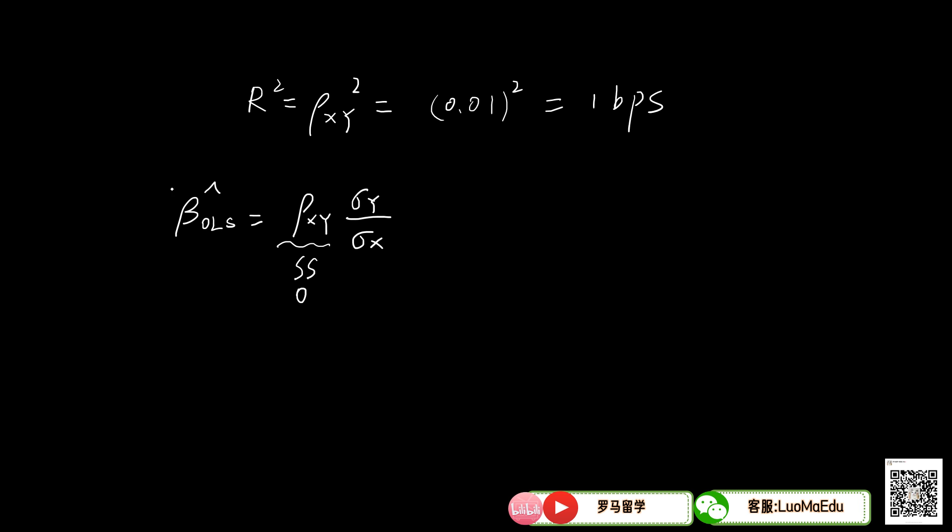At the same time, we want to make sure the expected value of beta hat is significantly different from zero. Although the correlation is close to zero, we can make the standard deviation of y very large, so it can go to positive infinity, and we can also make the standard deviation of x very small, so it can go very close to zero. So in this case, beta hat is still significant.